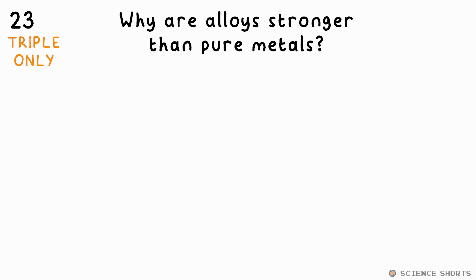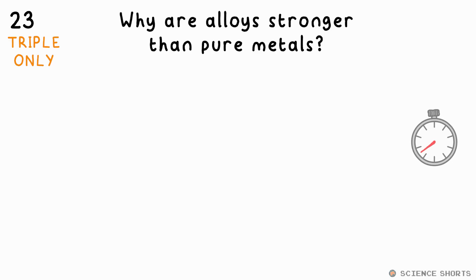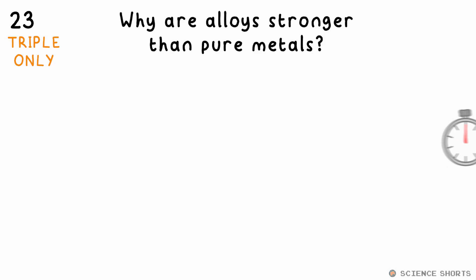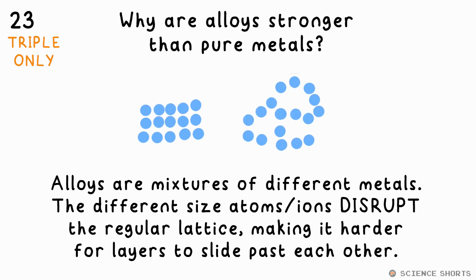Question 23. Why are alloys stronger than pure metals? Alloys are stronger because the different sized atoms disrupt the lattice — the pattern — making it harder for the layers to slide past each other.